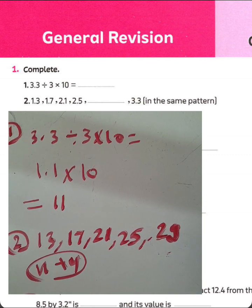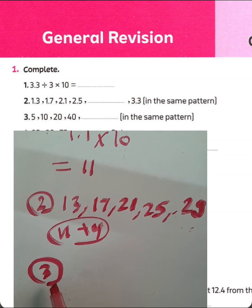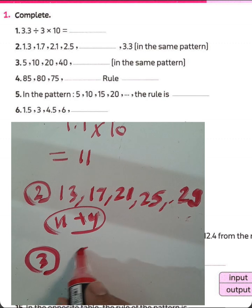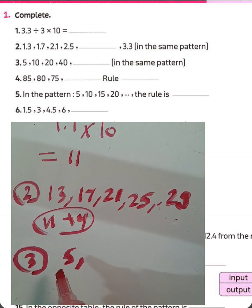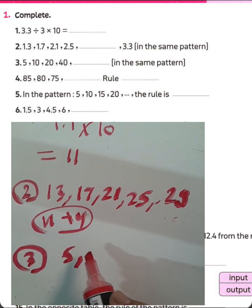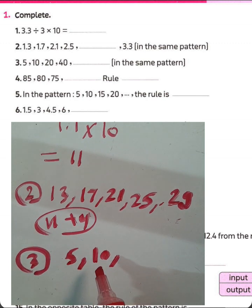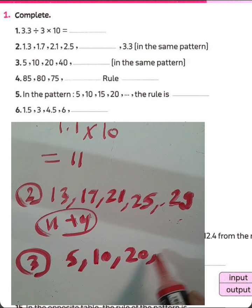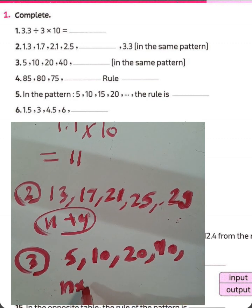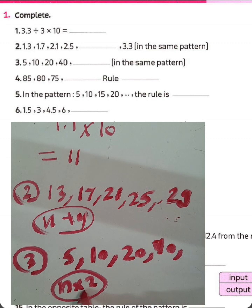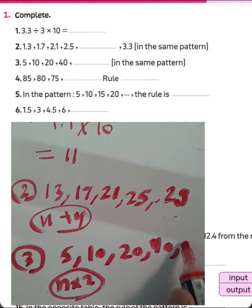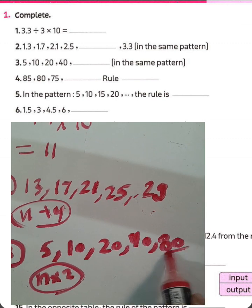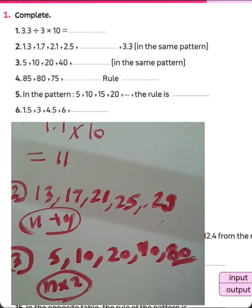Question number 3. In this pattern: 3, 5, 10, 20, 40. The pattern here is multiplication by 2. 40 times 2 equals 80. The rule is N times 2. So you must write 80 in the space for question number 3.